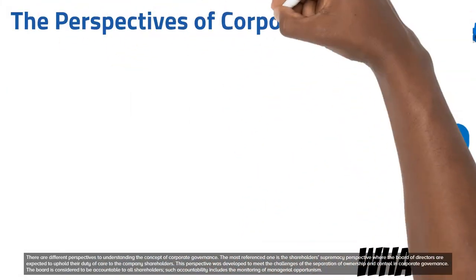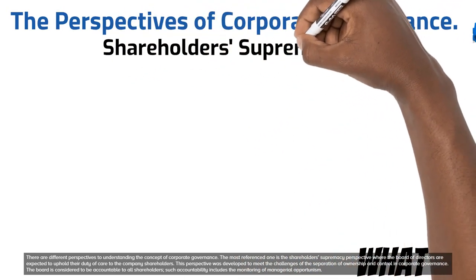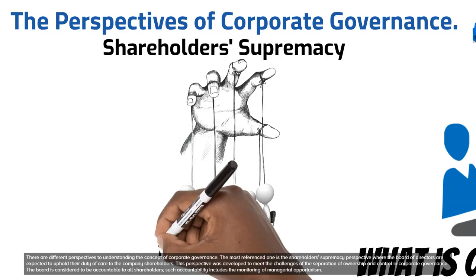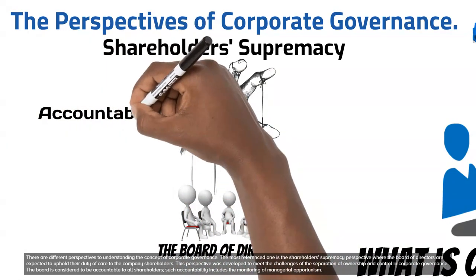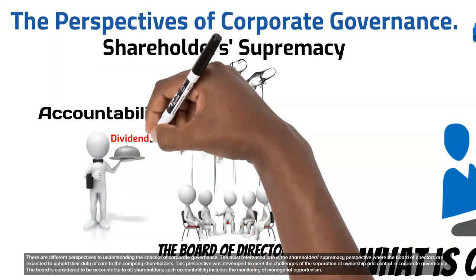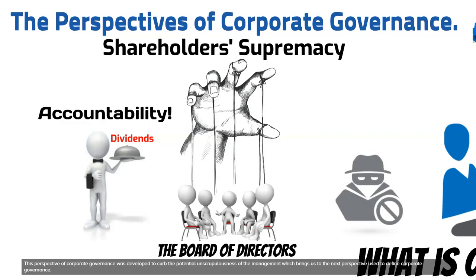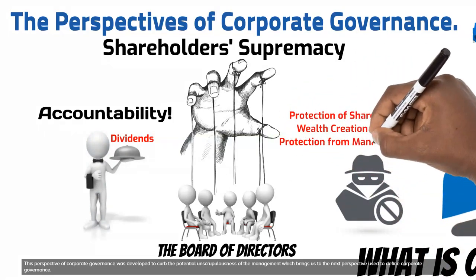There are different perspectives to understanding the concept of corporate governance. The most referenced one is the shareholders' supremacy perspective, where the board of directors are expected to uphold their duty of care to the company shareholders. This perspective was developed to meet the challenges of the separation of ownership and control. The board is considered to be accountable to all shareholders, and such accountability includes the monitoring of managerial opportunism. This perspective of corporate governance was developed to curb the potential unscrupulousness of management.